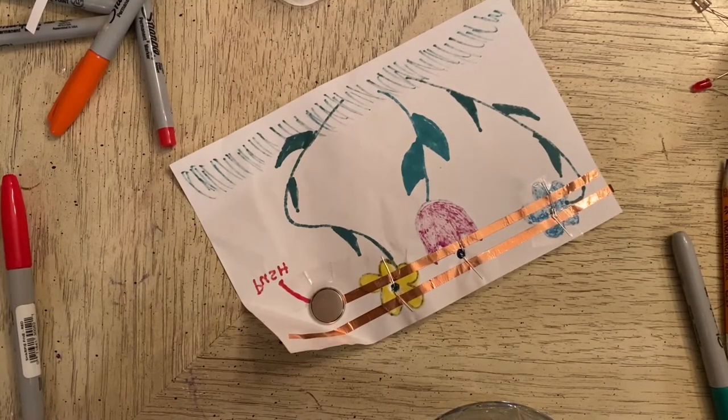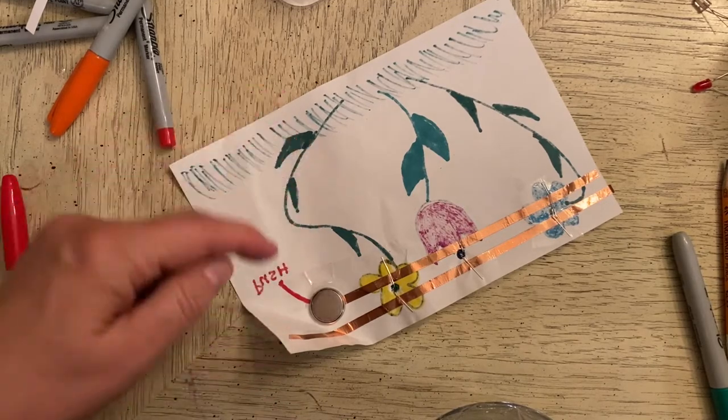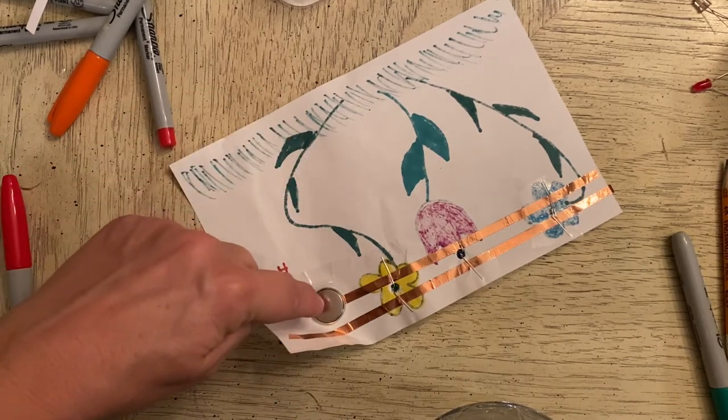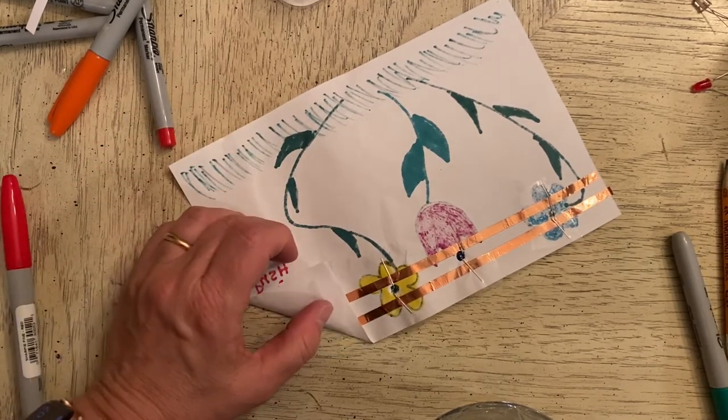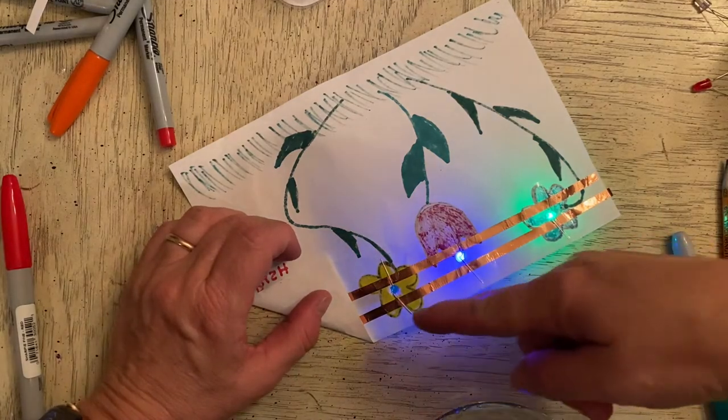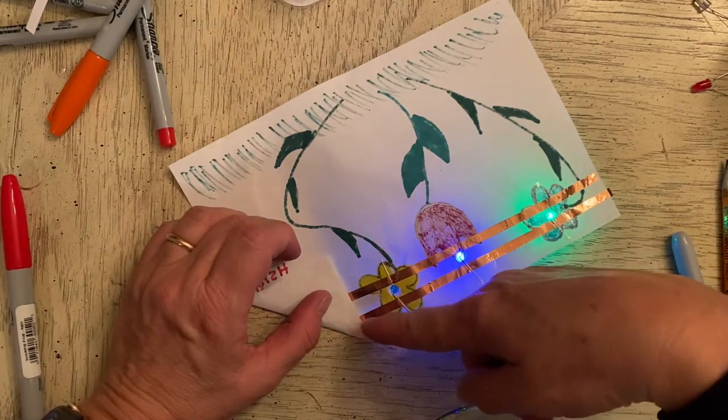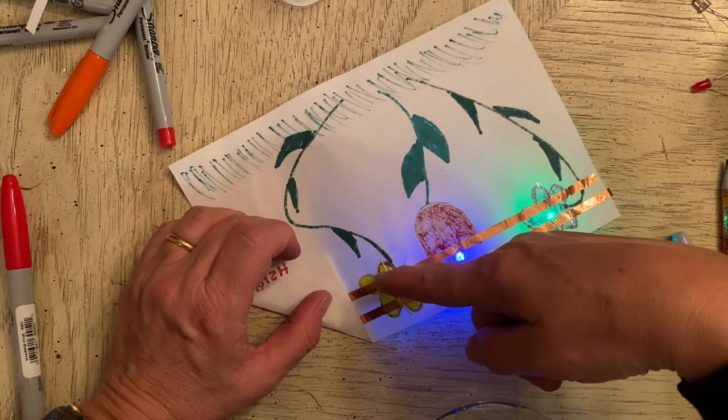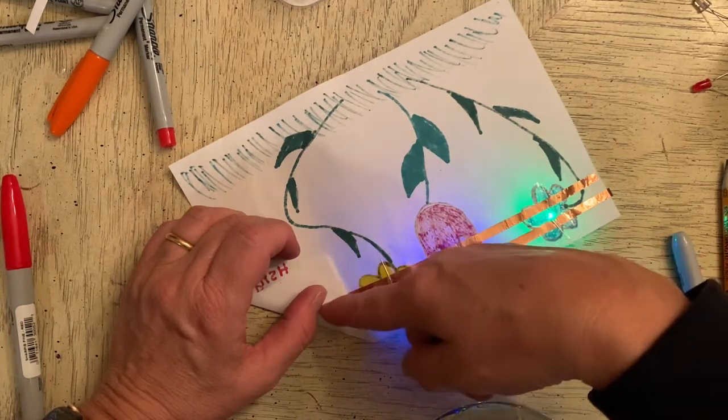I also want you to understand that electricity or the electrons flow from the negative side of this battery. When I complete the circuit, they flow down this negative, across the bridge, and back to the positive side of the battery.